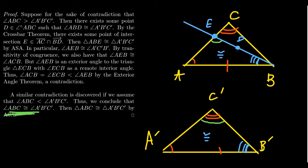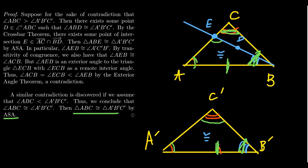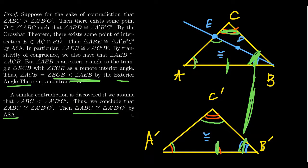The contradiction arose from assuming angle ABC was greater than angle A'B'C'. The other direction — assuming it is less — yields the same contradiction by a symmetric argument. Therefore angle B must be congruent to angle B'. Combined with the congruence of angles A and A' and the congruence of side AB, angle-side-angle gives us that the two triangles are congruent. Note that the proof mirrors the Euclidean approach but uses the Exterior Angle Theorem instead of angle sums, keeping this a theorem of neutral geometry.